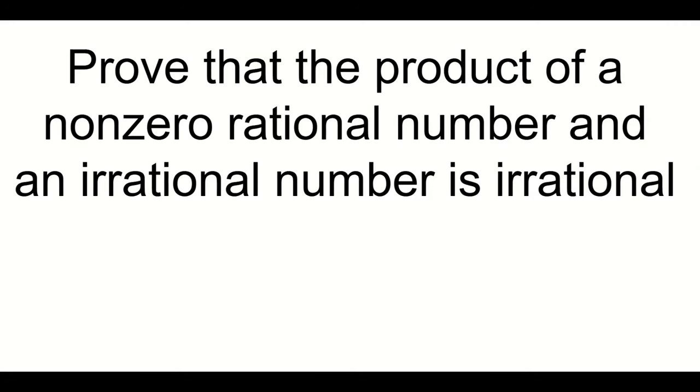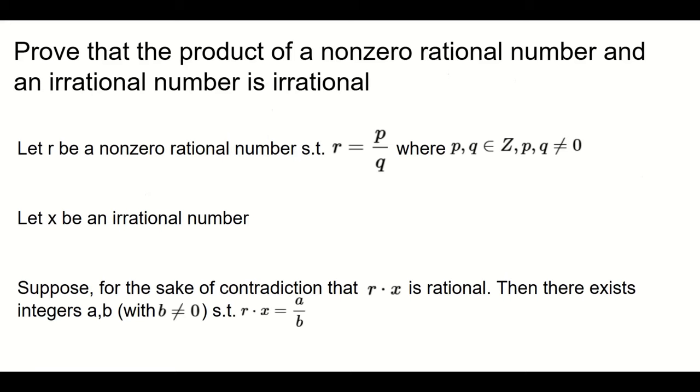The product of a non-zero rational number and an irrational number is irrational. So let R be the rational number such that it's non-zero. And we can write it as a fraction of two integers, P and Q, such that both P and Q are not equal to zero.